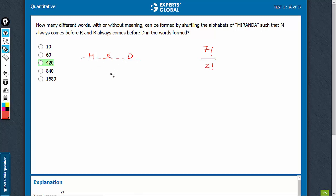You think of it intuitively that MRD, they can be shuffled themselves in 3 factorial, which is six ways. And out of these six ways, this combination of MRD comes exactly once.